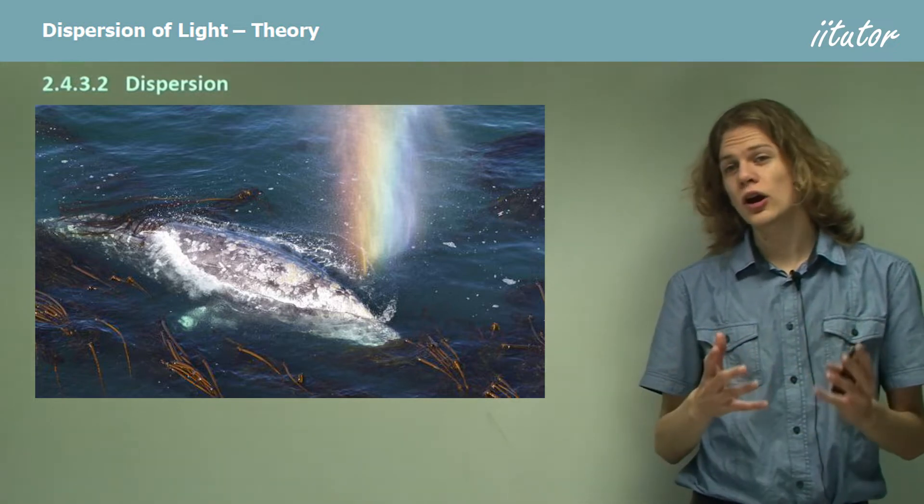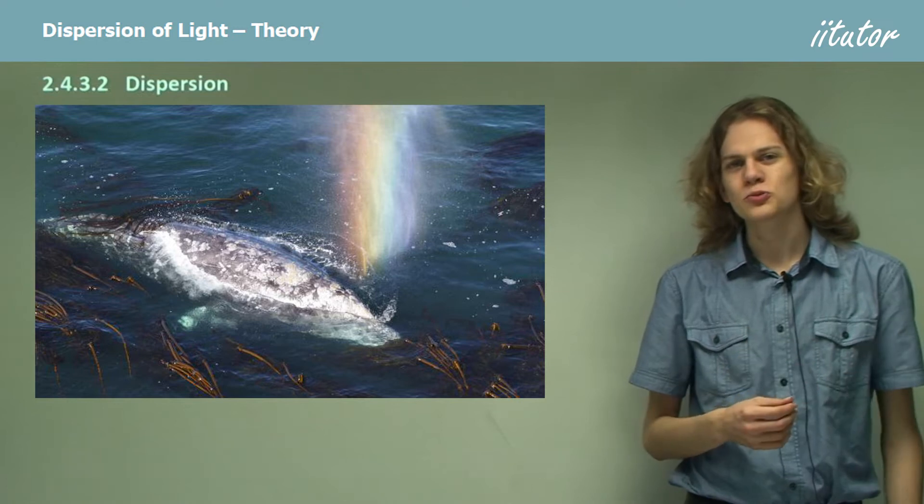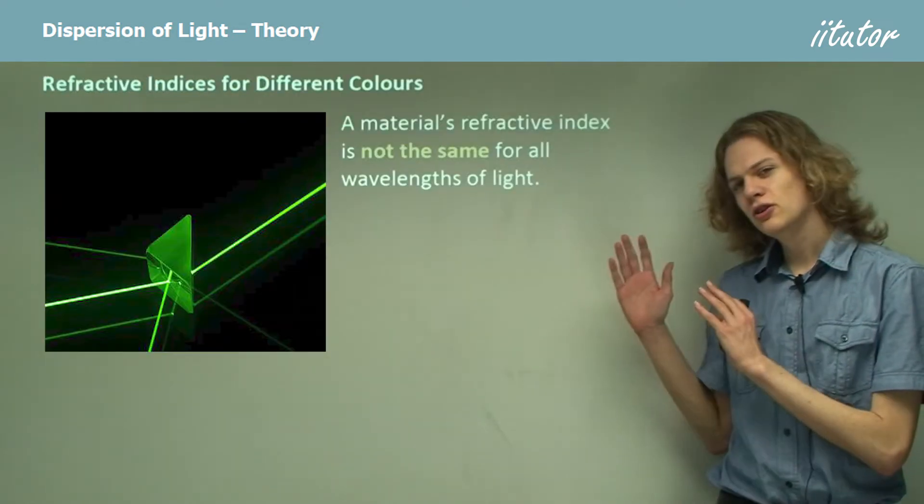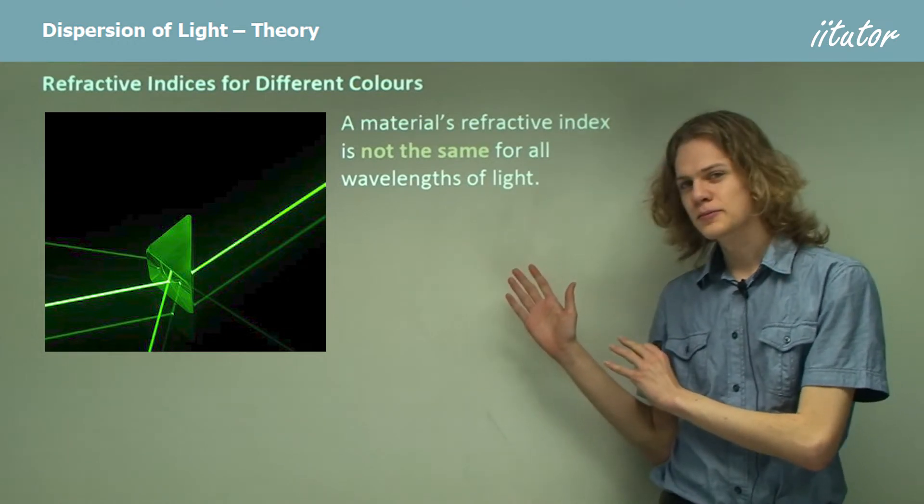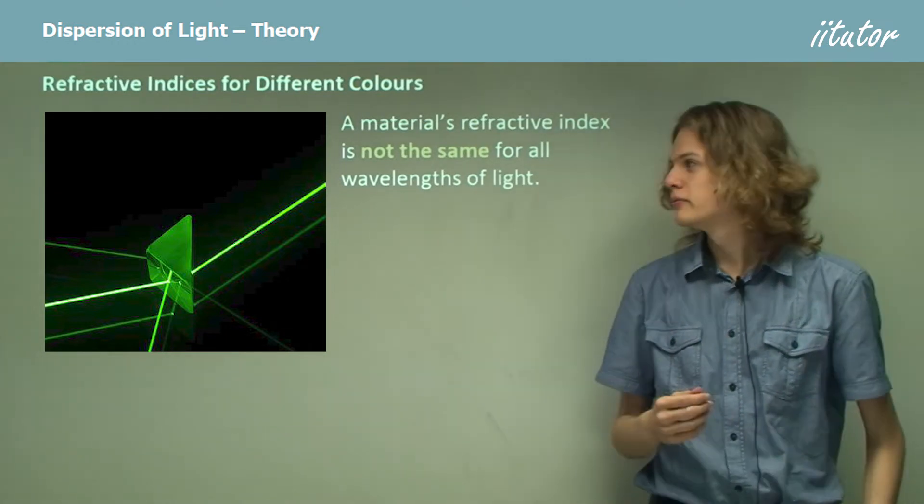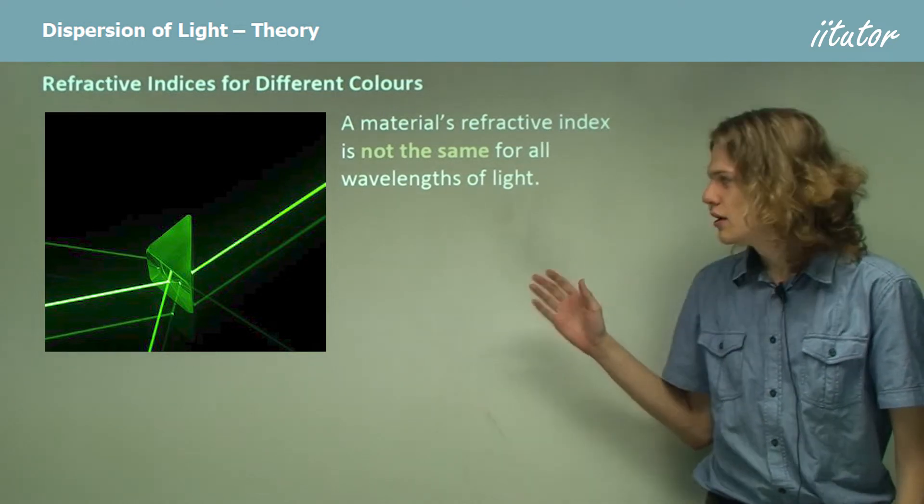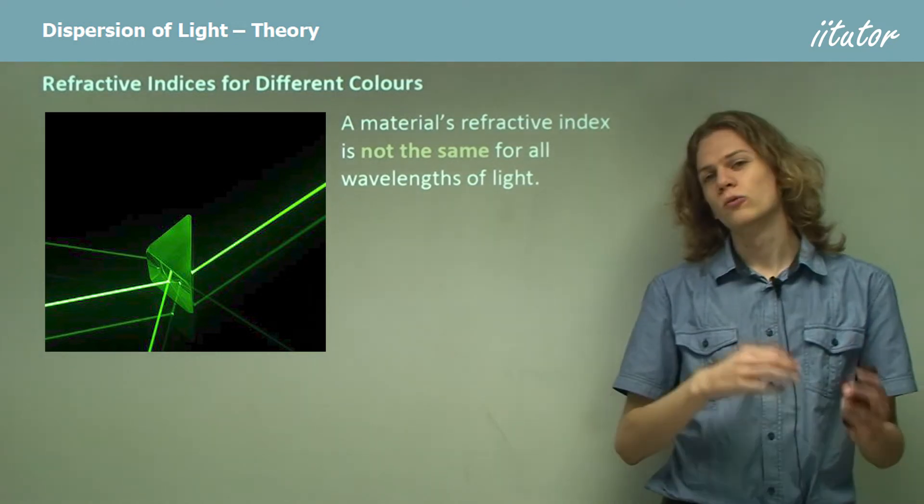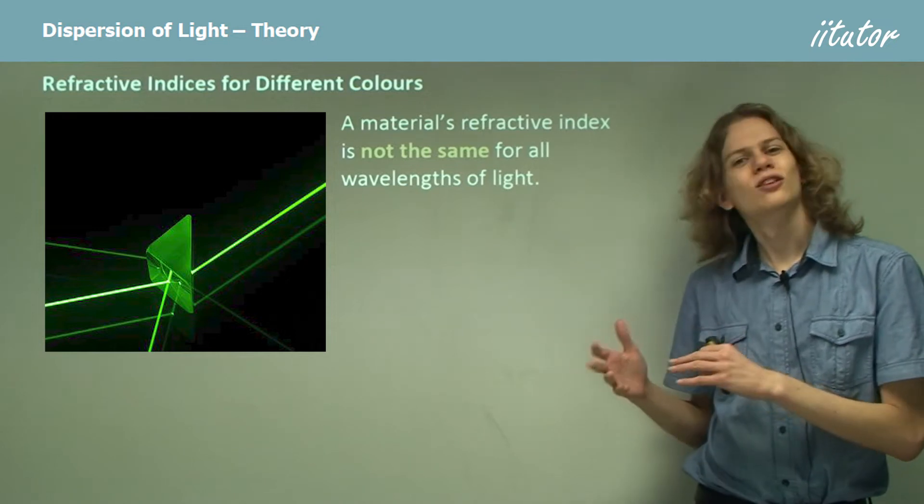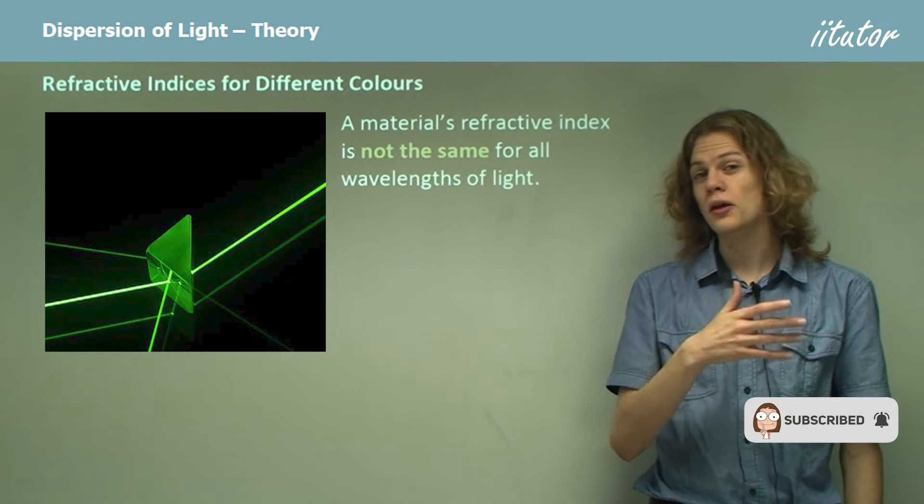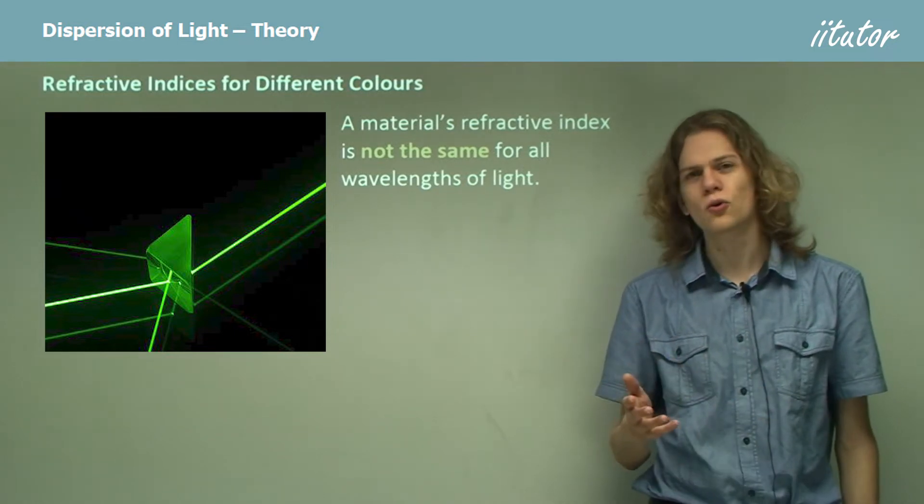Dispersion means that we can divide white light into different colors, which is what produces rainbows. Now it turns out that a material's refractive index is not going to be the same for every wavelength of light. For green light it'll be one value, but for red light it'll be a very slightly different value. It might simply be the difference between 1.33 and 1.34 or something similar.